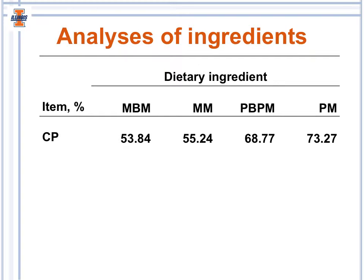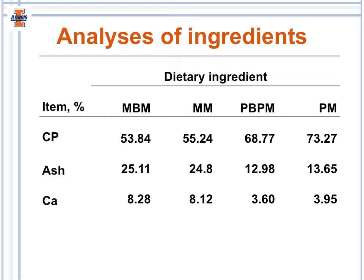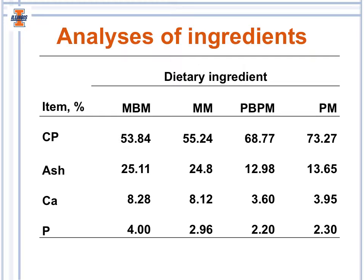The ingredient analysis shows that meat and bone meal, meat meal, poultry byproduct meal, and poultry meal are substantial sources of protein, containing between 50% and 75% crude protein. However, ash content is quite high: meat and bone meal and meat meal contain approximately 25% ash, while poultry byproduct meal and poultry meal contain about 13%. Calcium concentrations are 8% in meat and bone meal and meat meal, and 3.6% and nearly 4% in poultry byproduct meal and poultry meal, respectively. Phosphorus content is also high: meat and bone meal contains 4%, meat meal 2.96%, poultry byproduct meal 2.2%, and poultry meal 2.3%.